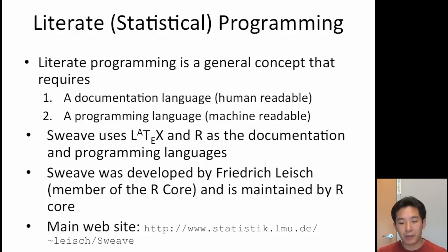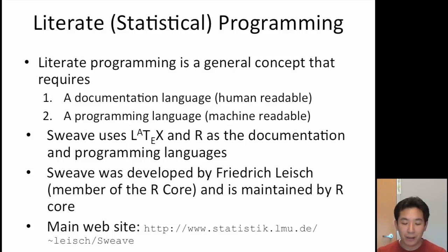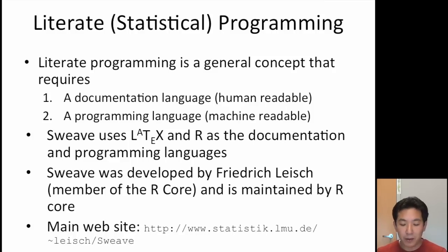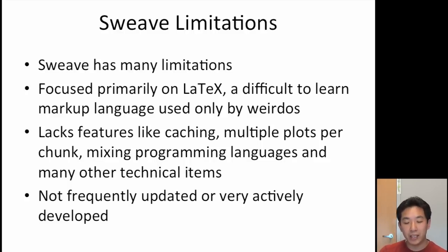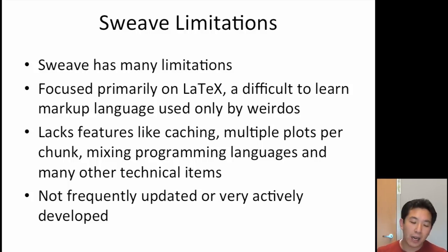The basic idea behind literate programming is that you need a documentation language that's human readable and a programming language that's machine readable. One of the original systems in R designed to do this was called SWeave, which uses LaTeX as its documentation language and R as its programming language. It was developed by Fritz Leisch, a core member of R, and is still maintained by R Core. However, there are many limitations to the original SWeave system — it's focused primarily on LaTeX, which many people are not familiar with, it lacks features like caching, multiple plots per page, and mixing programming languages, and it's not very actively developed.